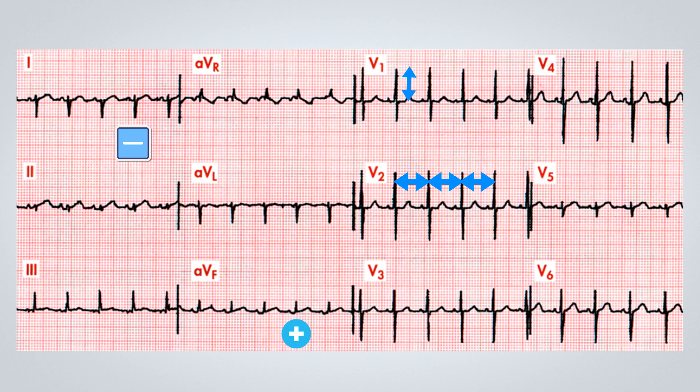The normal QRS complex in healthy patients without any structural disease begins with a small R wave and a large S wave in V1. As we move from V1 to V6, the R wave grows and the S wave decreases. This is not the case here, which suggests a possible right ventricular overload. So we would have a sinus tachycardia with an extremely short QRS complex duration, a deviation of the axis to the right, and some signs of right ventricular overload.